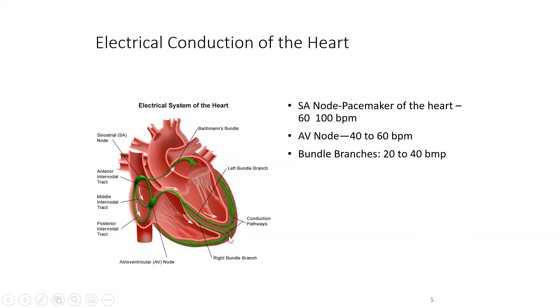If the bundle branches are also not working, then you will have what we call the conduction pathway firing at less than 20 beats per minute. This person will have a serious problem if the electrical system within the heart is not working.